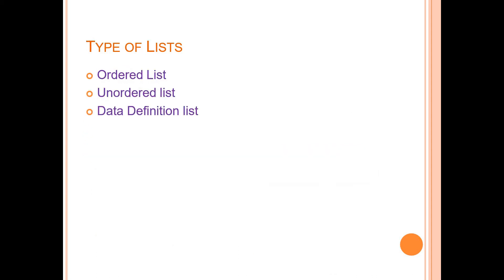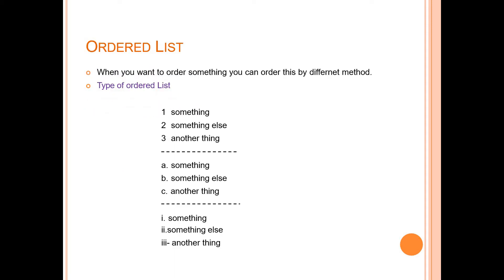Then we move on to the types of the list. There are three types of the list: ordered list, unordered list, definition list. Then why we use the ordered list, why we use the unordered list, why we use the definition list, we will see with the help of examples. First, I want to explain about the ordered list. The ordered list is a list of items displayed in a particular order - either 1, 2, 3, 4, or A, B, C like this.